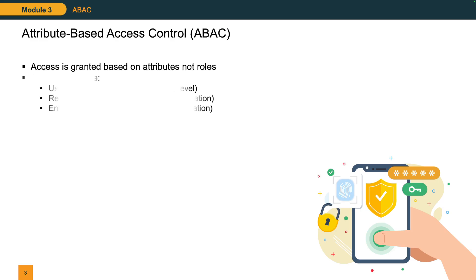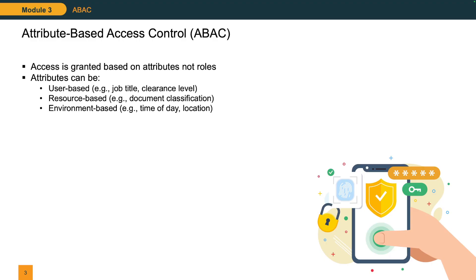What do I mean by attributes? We can use things such as user-based attributes like your job title or your clearance level; resource-based attributes like whether something is top secret or classified — which we'll talk more about when we discuss MAC and DAC; and environment-based attributes, which include time of day and location. Think about: where am I, at what timeframe?